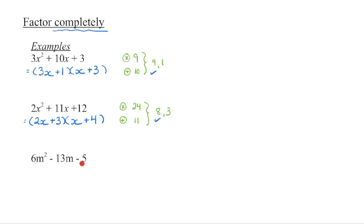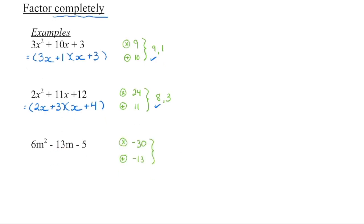Next one — check: greatest common factor. There is not one. So we're going to look for 2 numbers that multiply to negative 30 and add to negative 13. Some people have a hard time finding those numbers initially. If we look at the numbers that add to negative 13, there are so many possibilities that's not going to be super helpful. So instead we want to say what are the numbers that will multiply to negative 30, because there are a limited number of factors for that one. So we're going to make a table. We're going to ignore the sign for a second and look at what multiplies to get positive 30.